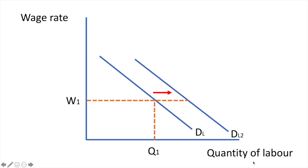At wage rate W1, there is now an increase in the quantity demanded of labour of Q2, but this is along the new demand curve. Using our explanations from before, this could be for a variety of reasons.